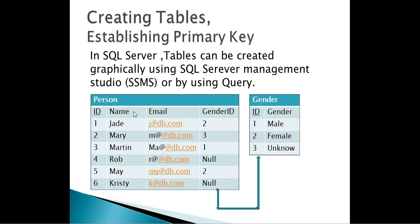In this session we will create 2 tables: Person and Gender. Within the Person table I want to mark the ID column as the primary key column, and in the Gender table I want the ID column to be marked as a primary key column as well. The primary key is used to uniquely identify each record in that table. For example, if I have 2 Marys in the Person table, I can uniquely identify each one using the primary key column — one Mary might have ID 2 and another ID 7.